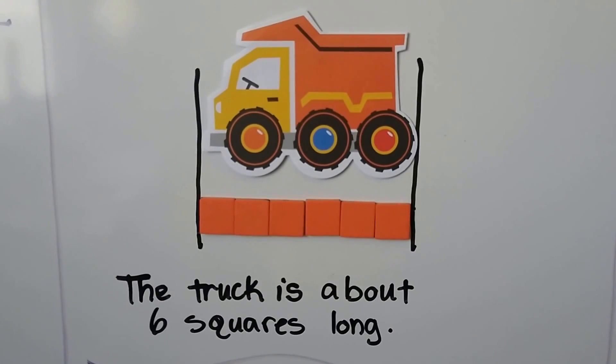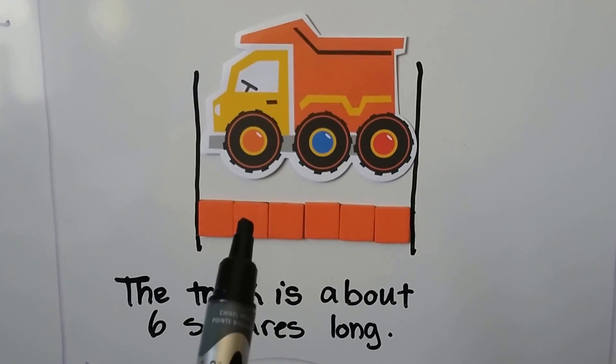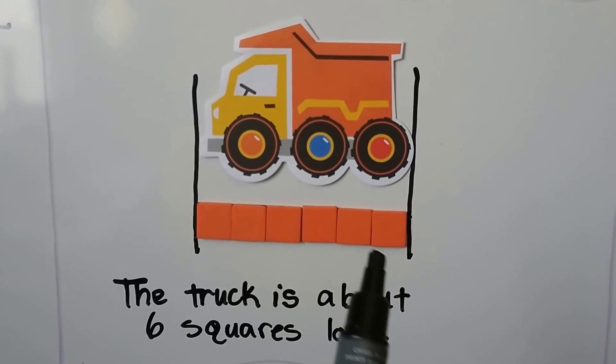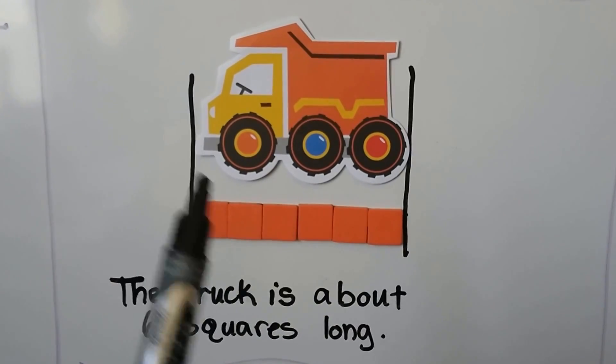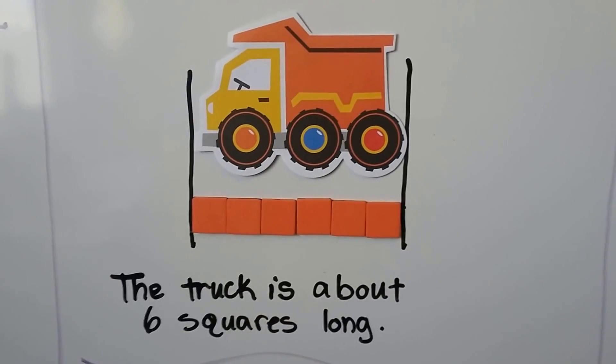This toy truck is about six squares long. One, two, three, four, five, six. From the front to the back, it's about six squares long.